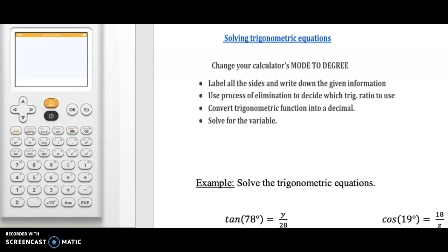Hello once again. In the last video I gave you a brief idea about what basic trig ratios — sine, cosine, and tangent — are, and why it is important to label all the sides before you decide which trig ratio to use. Now once you have set up the equation, the question arises how to solve it. We will talk about solving for the variable of the sides. The focus here will be on missing side lengths.